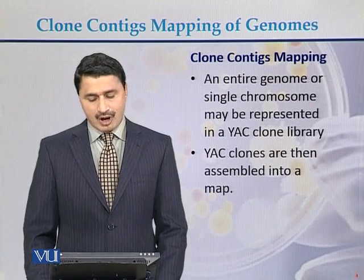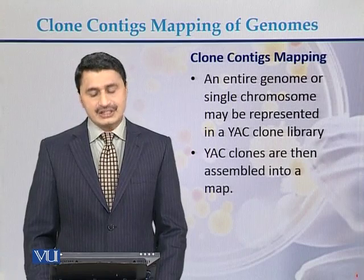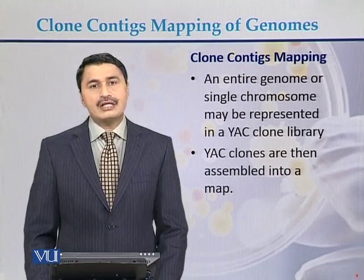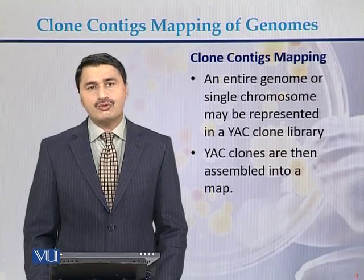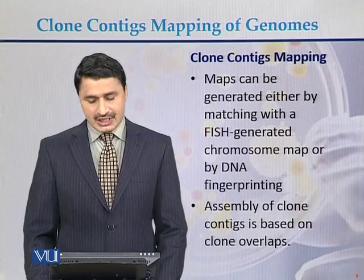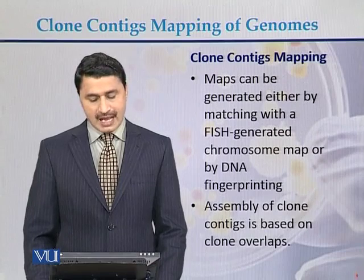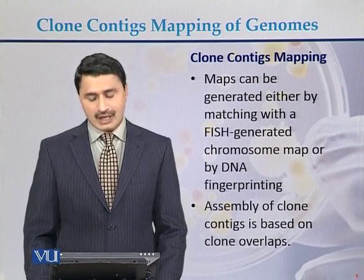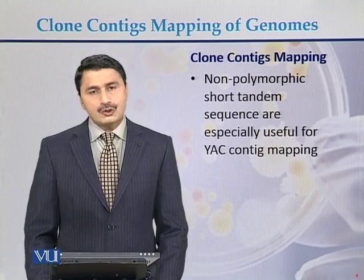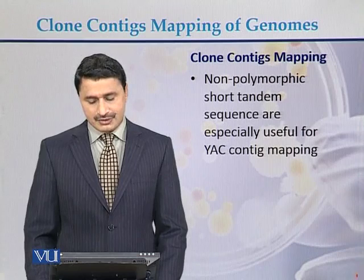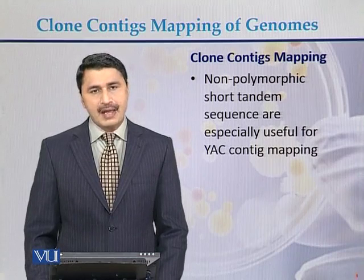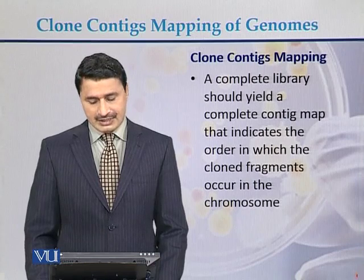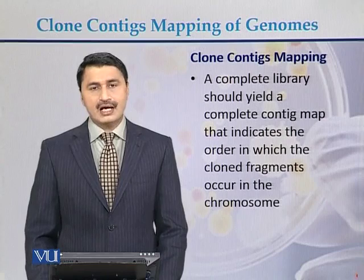An entire chromosome or single chromosome may be represented in a yeast artificial clone library. Yeast artificial clones are then assembled into a map called a clone contig map. Maps can be generated either by matching a FISH-generated chromosome map or by DNA fingerprinting. Assembly of clone contigs is based on the clone overlaps. Usually non-polymorphic short tandem sequences are used for YAC contig mapping. A complete library should yield a complete contig map that indicates the order in which clone fragments occur in the chromosome.